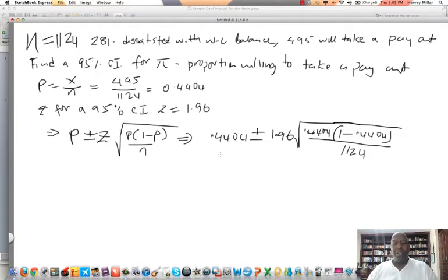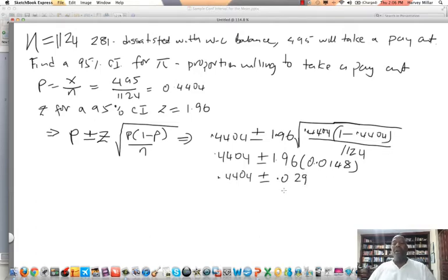So we could do the computation on that. Once we do the computation, we'll find that this is 0.4404 plus or minus 1.96 times 0.0148, which gives us 0.4404 plus or minus 0.029, once we do the arithmetic on that.